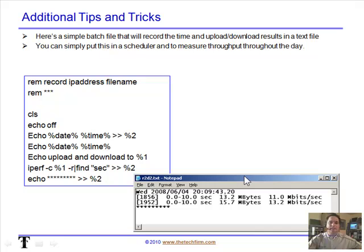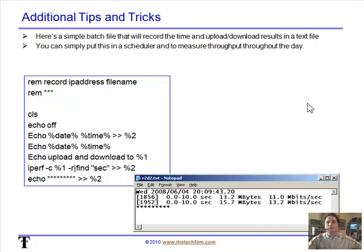A couple of tricks I like to use: I write a simple DOS batch file that echoes dates and times along with results to a text file. I can put that in the Microsoft scheduler and let it run every half hour or hour while I'm troubleshooting, which gives me an idea of throughput at various times of the day.